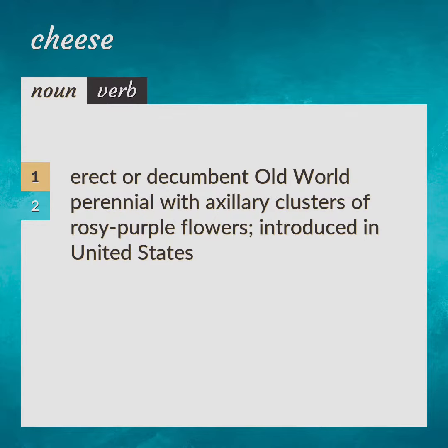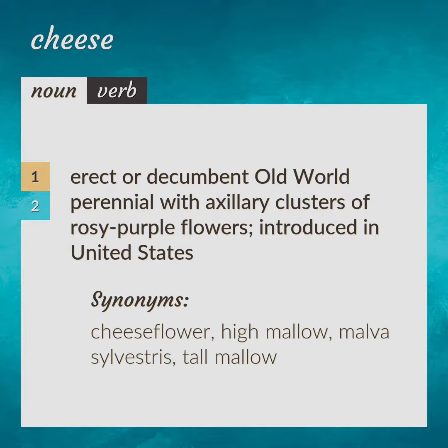Erect or decumbent Old World perennial with axillary clusters of rosy purple flowers, introduced in the United States. Also known as cheese flour, high mallow, malva silvestris, and tall mallow.